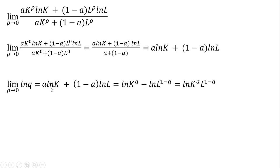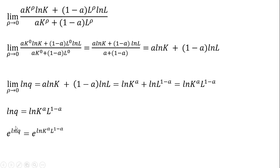Moving on, rewriting our last result here. Following the rules of natural logs, this a multiplied by the natural log of k can be rewritten as the natural log of k to the power a. This one-minus-a times the natural log of l can similarly be rewritten as the natural log of l to the power (1−a). Further applying log rules, this simplifies to the natural log of k^a times l^(1−a). Taking e raised to the power of the natural log of q on the left and e raised to the right-hand side, this simplifies down to our Cobb-Douglas production function.